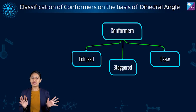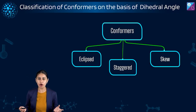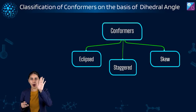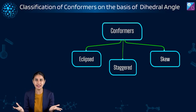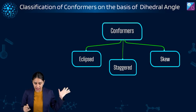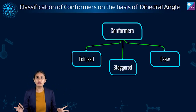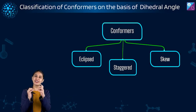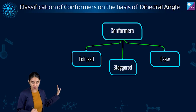So on the basis of this dihedral angle, we can have three very important kinds of conformers. Eclipsed — the name itself is clear. Just like in geography: solar eclipse, lunar eclipse — one object is completely hiding the other. The other is staggered, and the third is skew. Eclipsed and staggered are the two extremes, and whatever is neither eclipsed nor staggered comes under the skew category. Let's do them one by one.